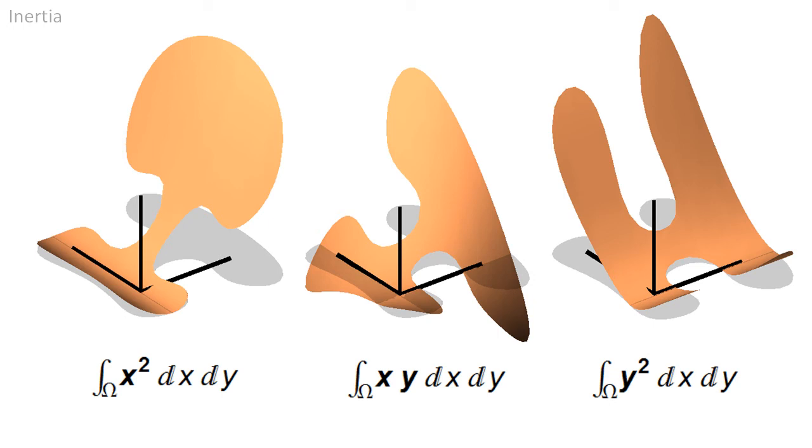Subsequently, the domain Ω can be rotated, so that the second integral evaluates to zero, and the inertia tensor is of diagonal form.